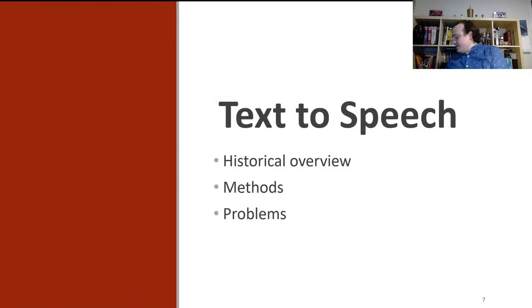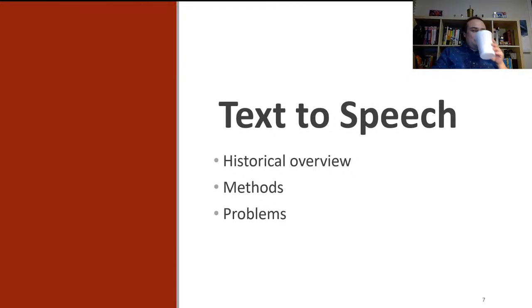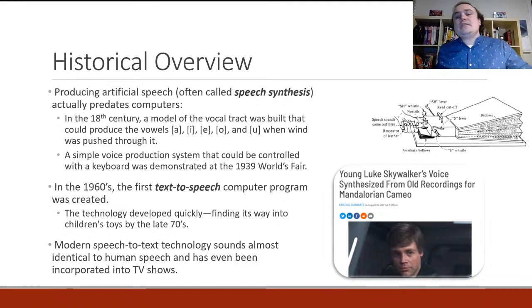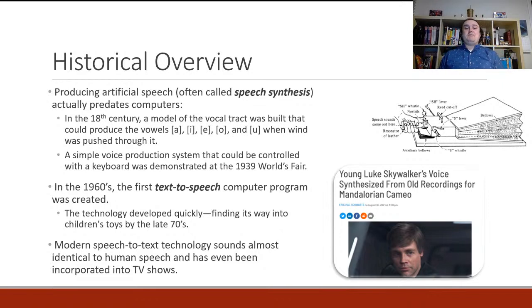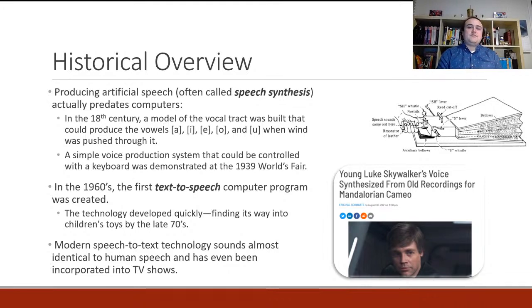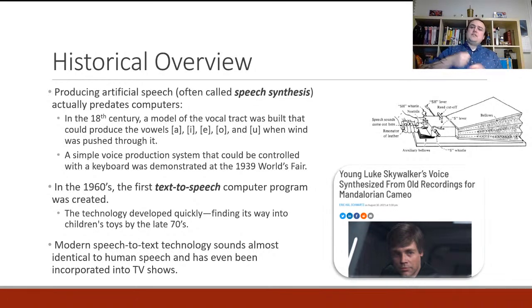Now let's talk about text-to-speech. The history for text-to-speech is actually much longer than speech-to-text — it's a bit of an easier task. Producing artificial speech, also often called speech synthesis, actually predates computers. In the 18th century, a model of the vocal tract was built that could produce the vowels A, E, O, and OO as long as you were pushing wind through it using a bellows — like you'd use to get a fire hot — while controlling parts to produce different vowel qualities.